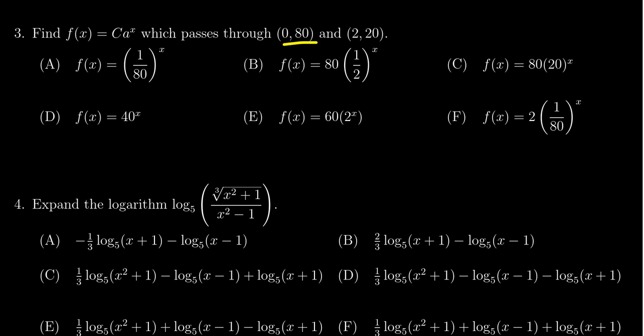Now, notice that the first point is given to you as the y-intercept. This is the initial value of the exponential function. If you have the y-intercept for an exponential, that's what you want to plug in first. Because notice that if you plug in f of 0, since it passes through the point (0,80), we know f of 0 equals 80.